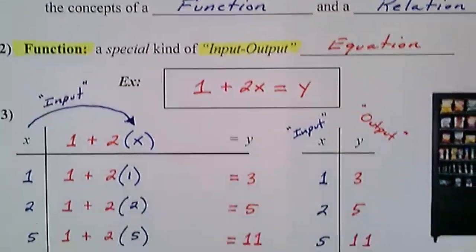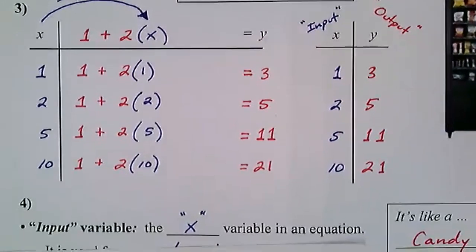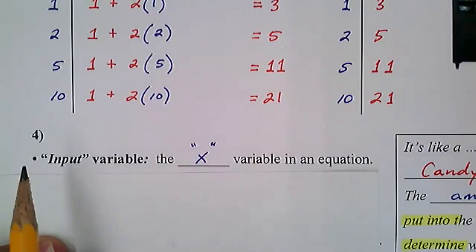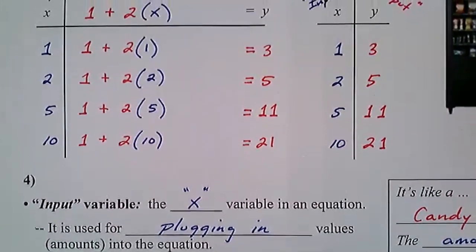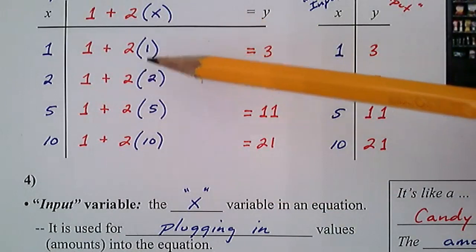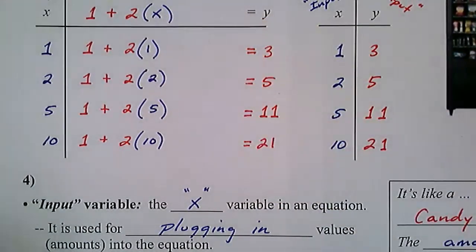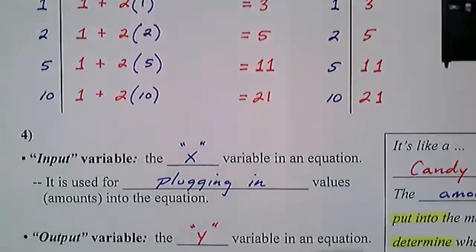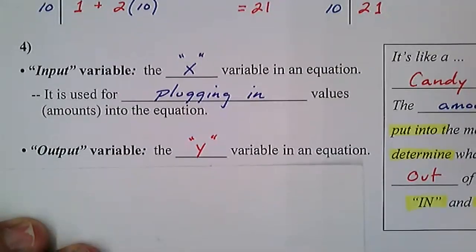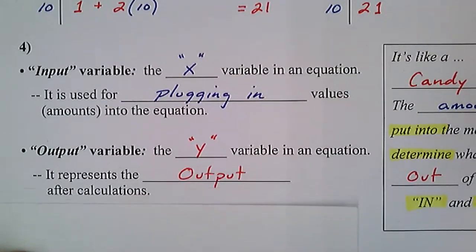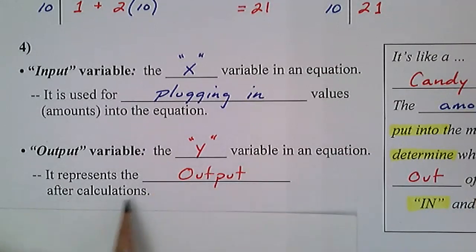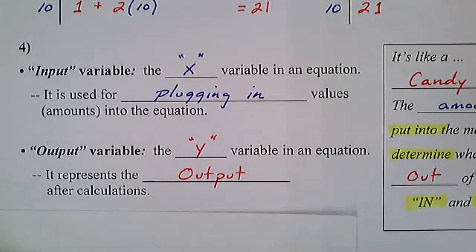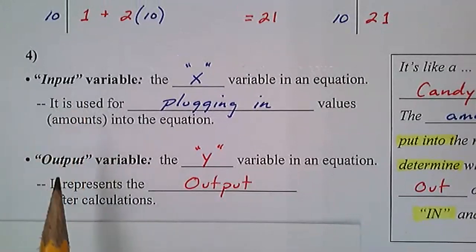In a function, we have an input variable, usually x, which is used for plugging in values into the equation. We plugged in one, two, five, and ten. We also have the output variable, usually y, which represents the total after calculations — the result after we've done the math. So functions have an input and an output.